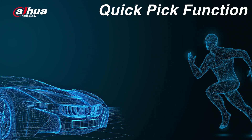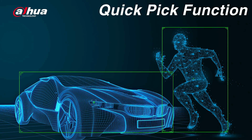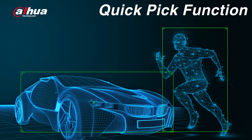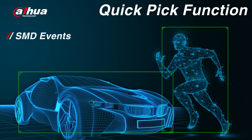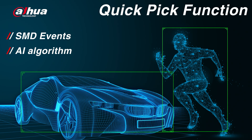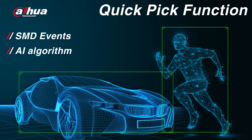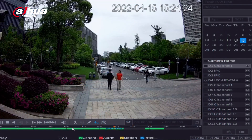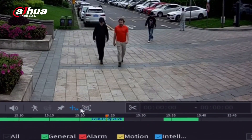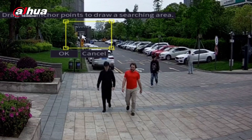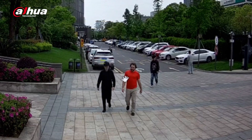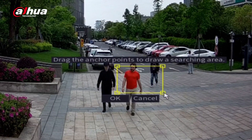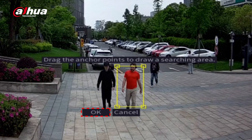The Quick Pick function allows you to quickly retrieve human or vehicle targets from SMD events using an AI algorithm of color extraction and comparison. Let's take a look at the Quick Pick function. Click the Quick Pick button. Drag the anchor points to select a searching area. Click the OK button.